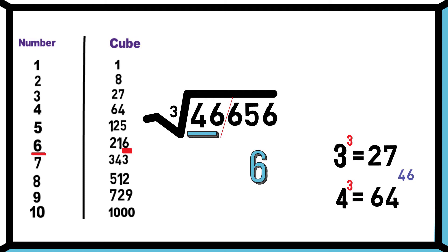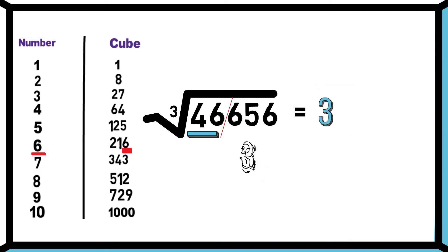We always take the smaller number, which is 3. So we will take 3 as the starting digit of the answer. That's it. We get our final answer, which is 36.